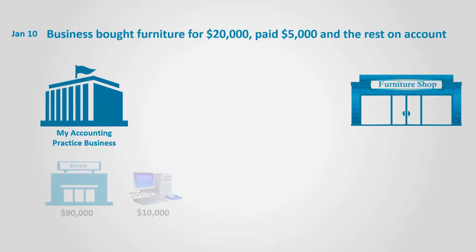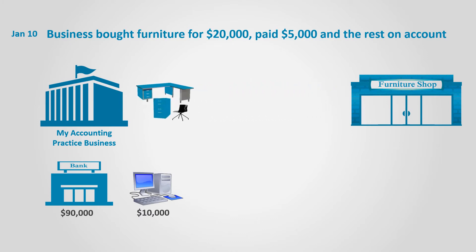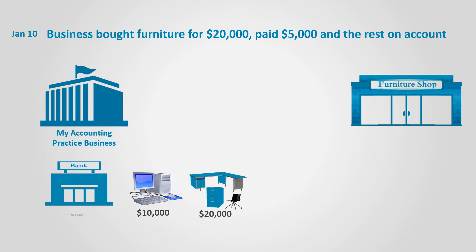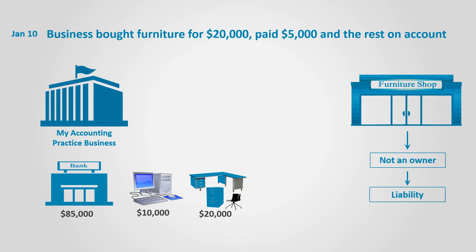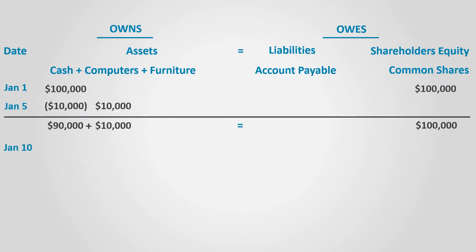On January 10th, the business bought office furniture for $20,000. It paid $5,000 in cash and the remaining $15,000 is to be paid later. The business owned a new asset, which is the office furniture for $20,000, but gave up $5,000 in cash.